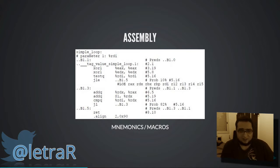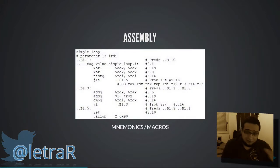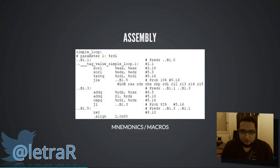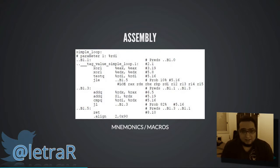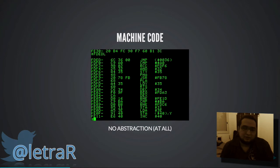O que era o assembly? O assembly usava mnemônicos e tinha macros. Ao invés de escrever '0010', você simplesmente colocava palavras parecidas com a língua inglesa que tinham a ver com o que aquela instrução ia fazer. Ao invés de escrever em código de máquina, você escrevia as instruções numa coisa um pouquinho mais parecida com a linguagem natural, e depois o assembler transformava aquele texto em linguagem de máquina e executava como código de máquina.